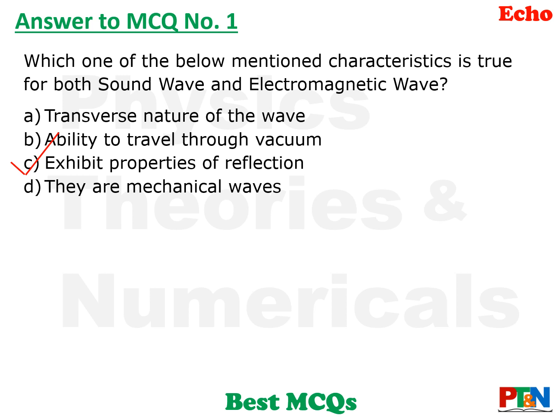The other three options are not correct. Electromagnetic waves are transverse waves, but sound waves are not. Electromagnetic waves can travel through vacuum, but sound waves cannot. Sound waves are mechanical waves, while electromagnetic waves are not — they are a combination of electric and magnetic fields. So the common property is the property of reflection.